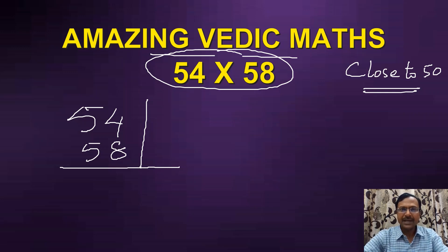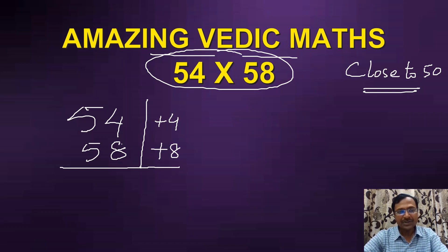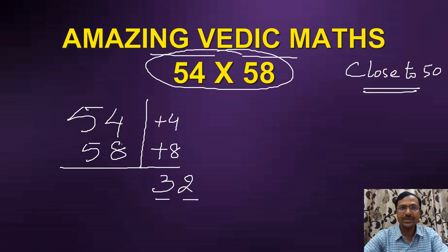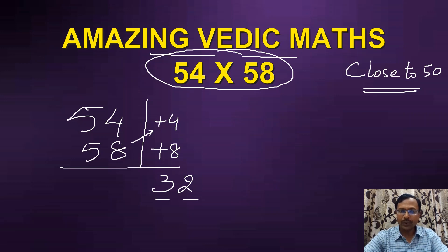54 is above 50 — how much above 50? It is 4 above 50, so I'll write plus 4. And 58 is again above 50, so that is plus 8. Now multiplication of 54 and 58 is difficult, but multiplication of 4 and 8 is very easy — 4 times 8 is 32. This has to be a two-digit number; if it is a single digit number, you prefix a zero. After that, the second step is important for the first part of the answer.